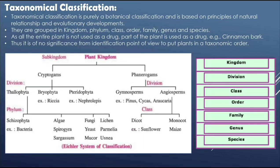The plant kingdom is divided into two groups: cryptogames and phanerogames. Cryptogames are further divided into thalophyta, bryophyta, and pteridophyta. Thalophyta is again further divided into schizophyta, algae, fungi, lichen, etc. Phanerogames are divided into two subgroups: gymnosperms and angiosperms. Angiosperms are further divided into two classes: dicotyledons and monocotyledons.